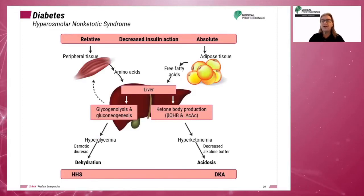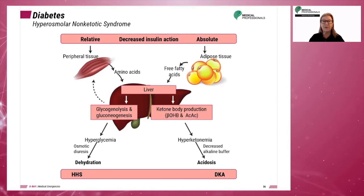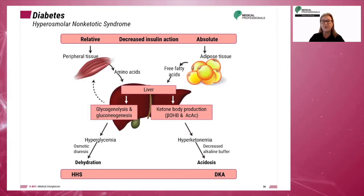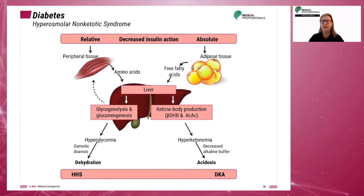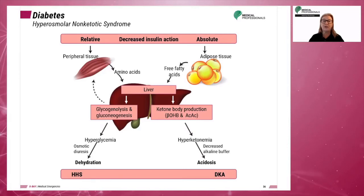Hyperosmolar non-ketotic syndrome is the loss of effective insulin in the body leading to diuresis and loss of fluids and electrolytes. It is caused by acute illness, infection, therapeutic procedures such as dialysis, or diagnostic procedures that require dietary change. The result is extremely high blood sugar levels. Untreated, this may cause the patient to have seizures, coma, and can result in death.